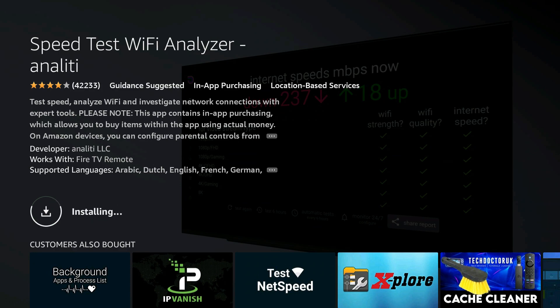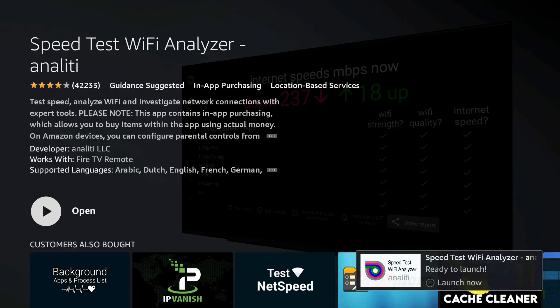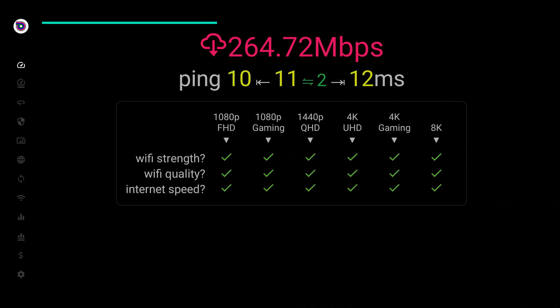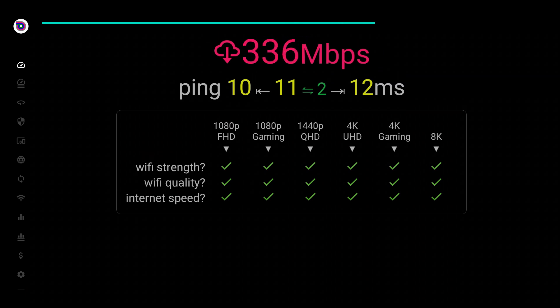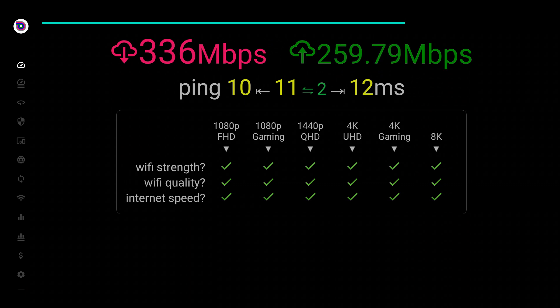Let's open this up. The only reason you'd need an app like this is to get a clear picture of what content you can stream based on your internet connection. I'm running at 335 megabits per second on the WiFi Analyzer speed test, and it says I'm able to stream content all the way up to 8K, 4K, and 1080p. I have green check marks all the way through, which is great.